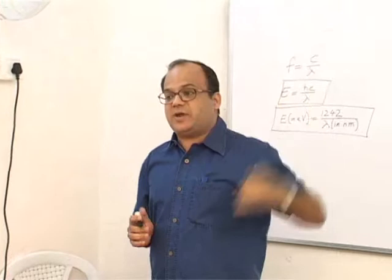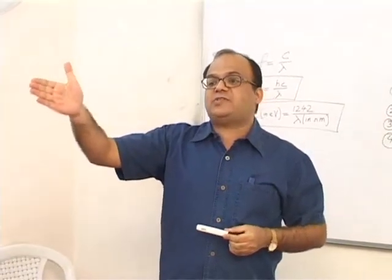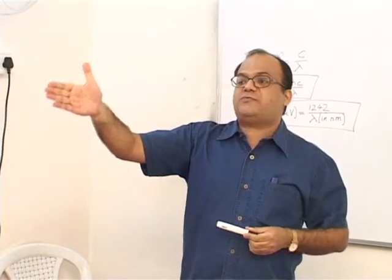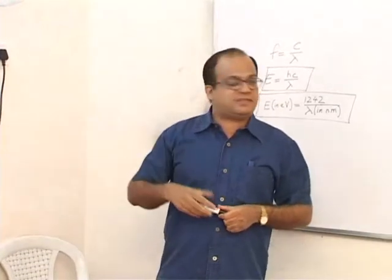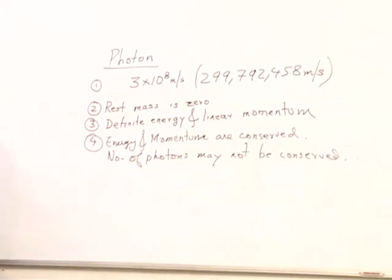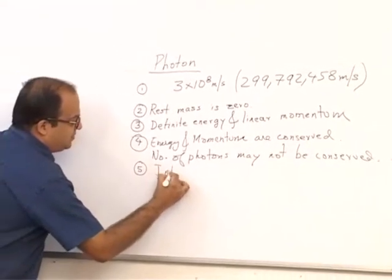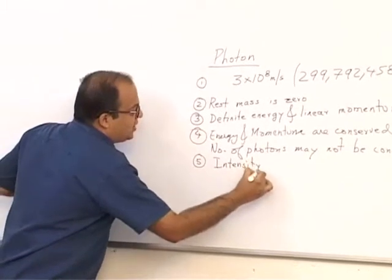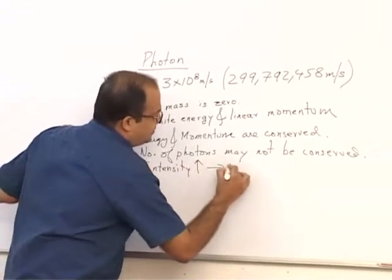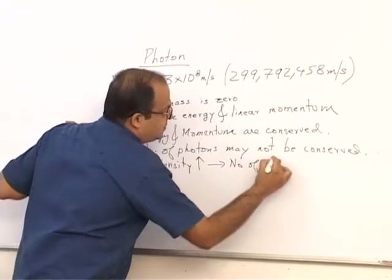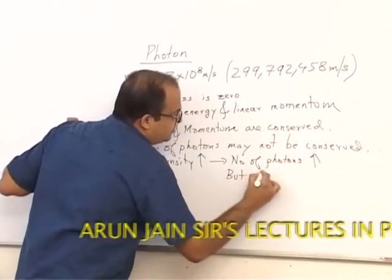Light coming from a tube light and hitting your hand — in that process, some photons get absorbed and they vanish. So the number of photons is not conserved, but energy and momentum are still conserved. When intensity increases, the number of photons increases, but not the energy of each individual photon.